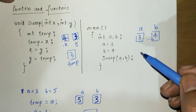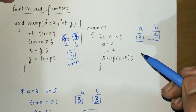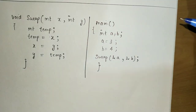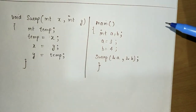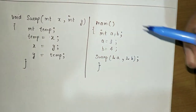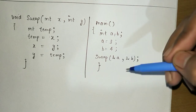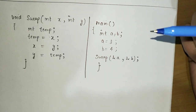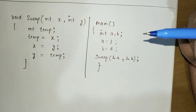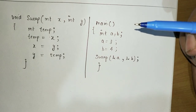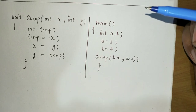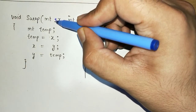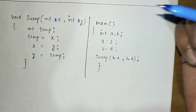Now let's see what happens if I use pointers to do the same thing. Here's the same swap code and main function with the same variables, names, and values, but the difference I'm going to make is making the formal parameters be pointers. I'm going to make x a pointer to integer and y a pointer to integer as well.